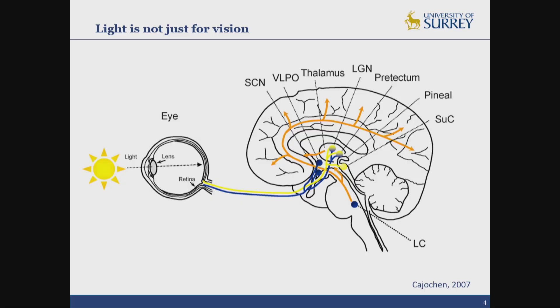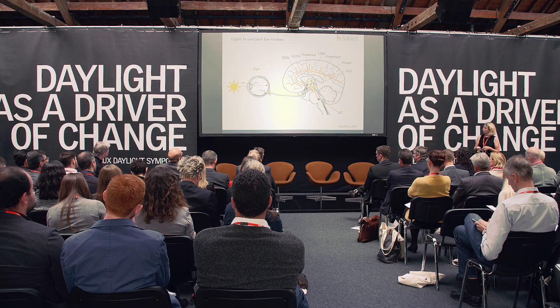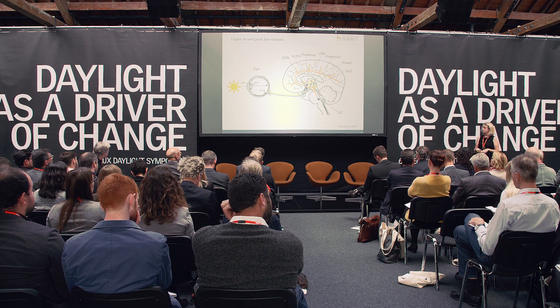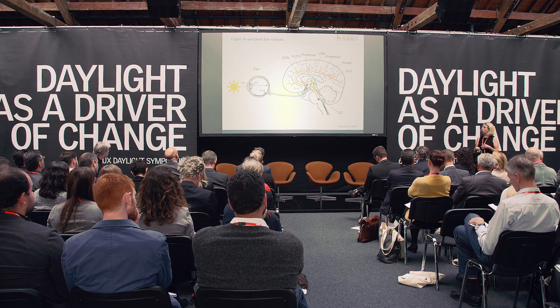We all know that light is very important for vision, but what is less well appreciated is the fact that light can have a profound impact on our behaviour and our physiology. From the back of our eye — our retina — we have a direct projection to a variety of different areas in the brain. This very dedicated tract provides information about the overall level of environmental light, and this information is transmitted to the brain, where we have a variety of different responses.